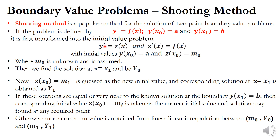The first derivative y prime is equated to another function z of x, and y double prime, which equals z prime of x, equals f of x. So this single second-order differential equation is transformed into two initial value problems: y prime equal to z of x and z prime equal to f of x, with corresponding initial values y of x-naught equal to a and z of x-naught equal to m0.